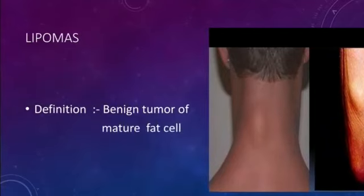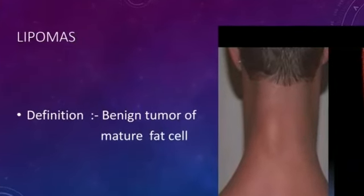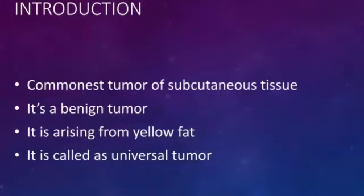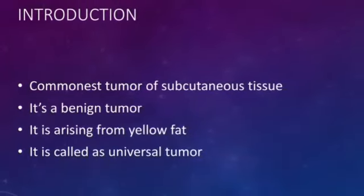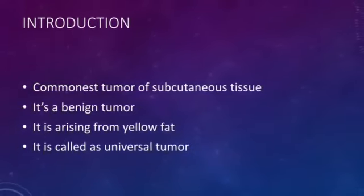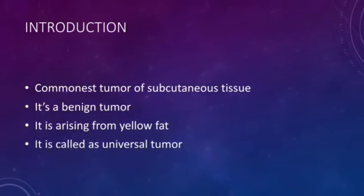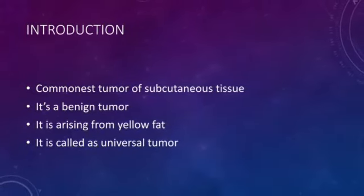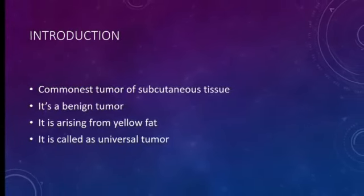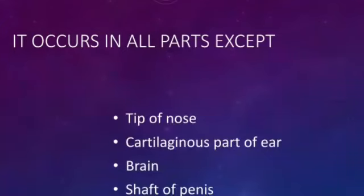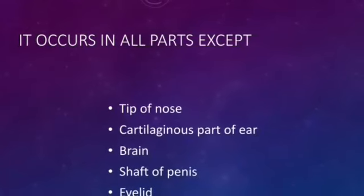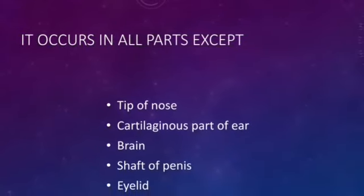In this class, we will discuss Lipomas. Lipomas are a benign tumour of mature fat cells. Lipomas are the most common tumour of subcutaneous tissue. They are benign tumours arising from yellow fat. Lipomas are also called the universal tumour because of their presence almost everywhere in the body.